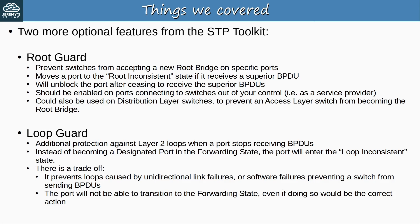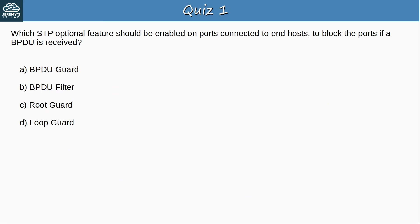Quiz question 1: Which STP optional feature should be enabled on ports connected to end hosts to block the ports if a BPDU is received? The answer is A, BPDU guard. BPDU guard is designed to immediately shut down a port if it receives any BPDUs, and should be used on ports connected to end hosts, often in combination with PortFast. RootGuard, on the other hand, is usually used on ports connected to other switches and will only disable a port if it receives a superior BPDU.